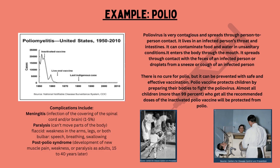The second example is polio. The CDC chart on poliomyelitis shows cases dropped dramatically after the inactivated vaccine and the live oral vaccine were introduced. Complications include meningitis, paralysis — both flaccid type, which is weakness in the arms or legs, and bulbar type, which involves speech, breathing, and swallowing difficulties — as well as post-polio syndrome, which is development of new muscle pain, weakness, or paralysis as adults, occurring 15 to 40 years later.